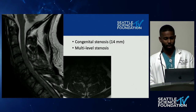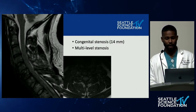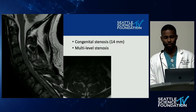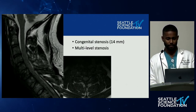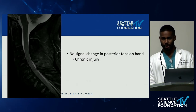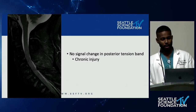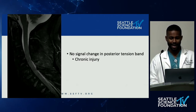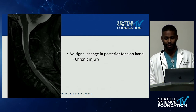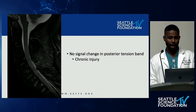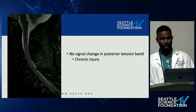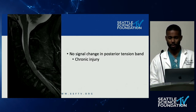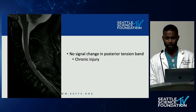MRI showed a pretty tight canal. This gentleman had congenital stenosis with a canal diameter of 14 millimeters and three to four levels of central stenosis. His MRI STIR image did not show any signal change in the posterior tension band, however this was likely due to the fact that this is seven weeks post-injury and most of the edema in the posterior ligamentous complex had most likely resolved.